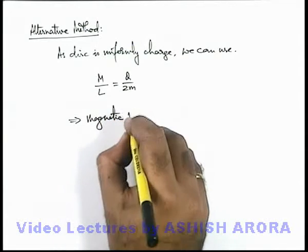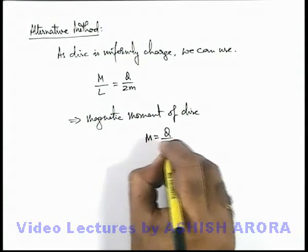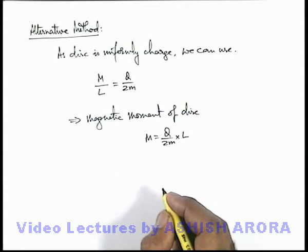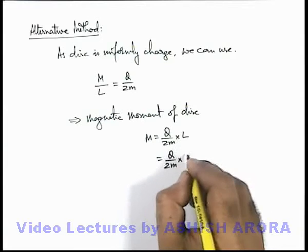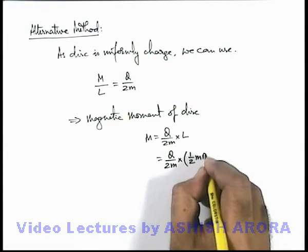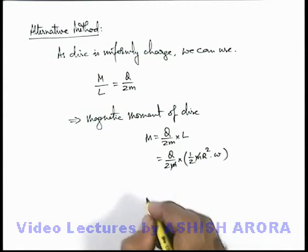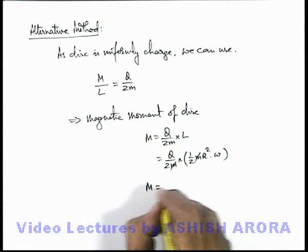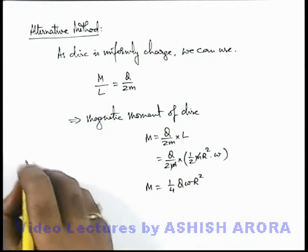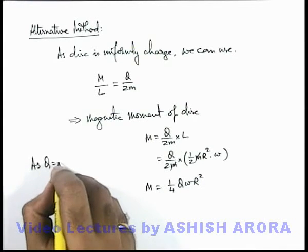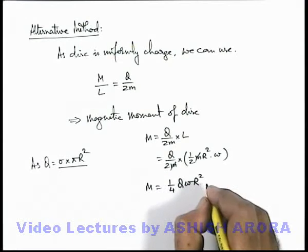So here angular momentum we can directly write as Iω. For the disc, moment of inertia is half mR² multiplied by the angular speed, and in this expression m gets cancelled out. And the result we are getting is M is equal to 1/4 q ω R². And the total charge we can write as charge of disc is charge density, surface charge density multiplied by πR² on the disc. So if we substitute it here, we are getting it 1/4 sigma π R⁴ omega.